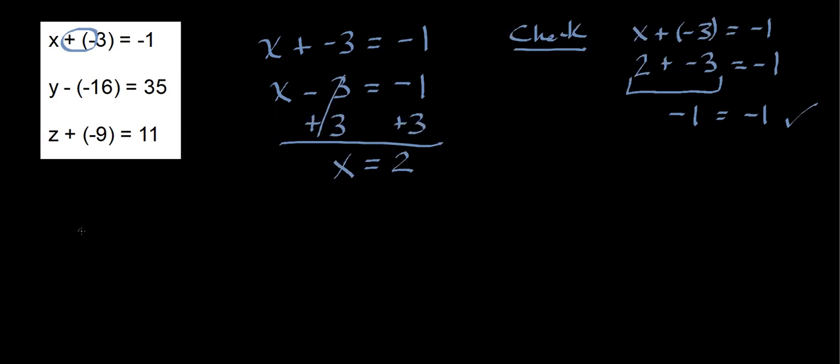So this next problem, I have y minus negative 16 equals 35. So once again, notice I have these two signs right here in the middle. Think about, subtracting a negative is the same thing as doing what? It's the same as adding a positive. So y minus negative 16 is the same as y plus 16 equals 35.